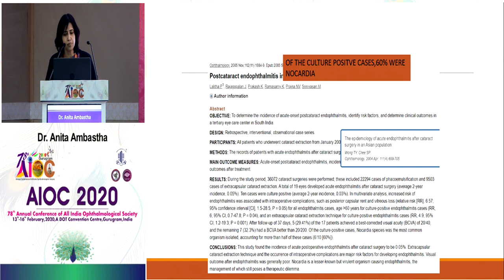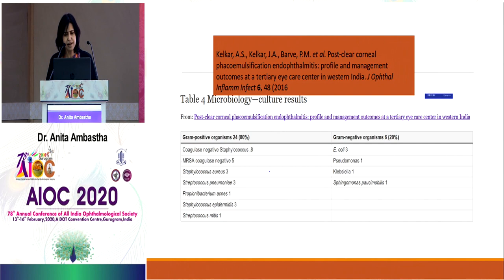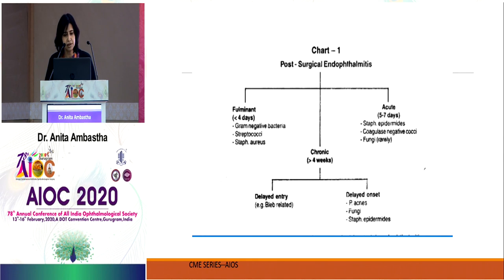In one Indian series, nocardia was the most common organism in post-cataract endophthalmitis, and in another, Pseudomonas aeruginosa was the most frequent overall pathogen. A study from western India showed gram-positive organisms predominating, with E. coli being the more common gram-negative organism rather than Pseudomonas — illustrating the geographic variability in causative organisms.